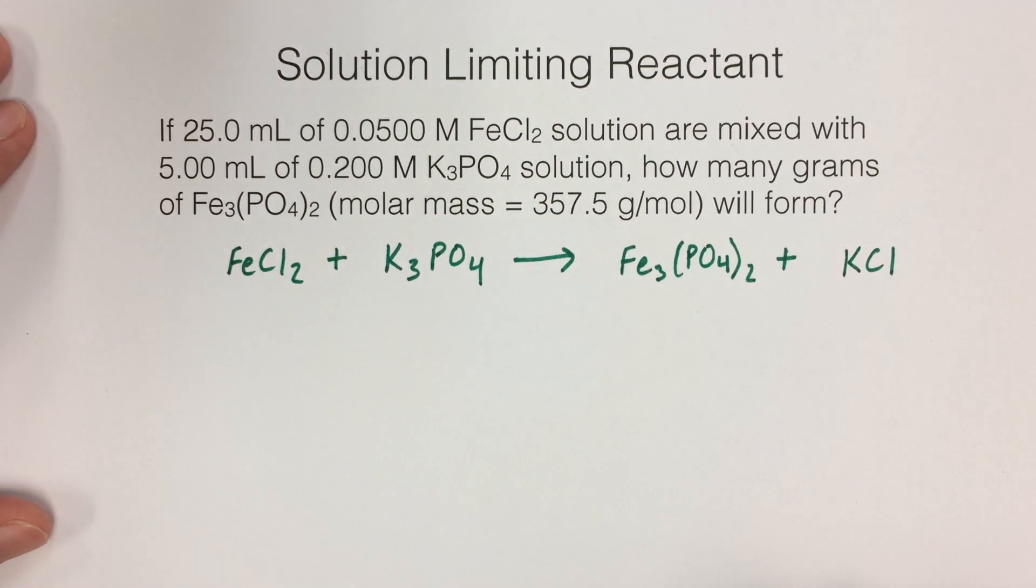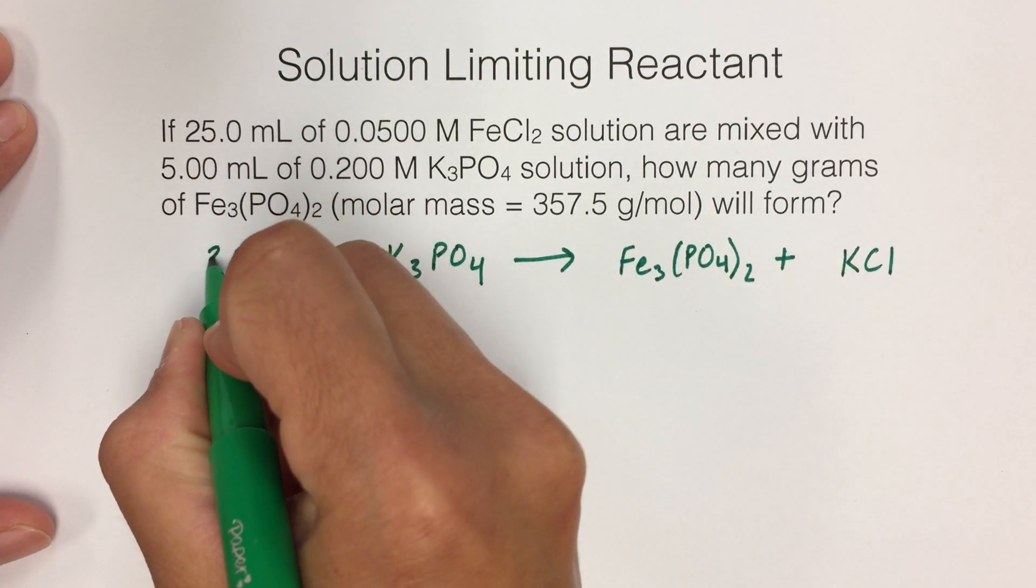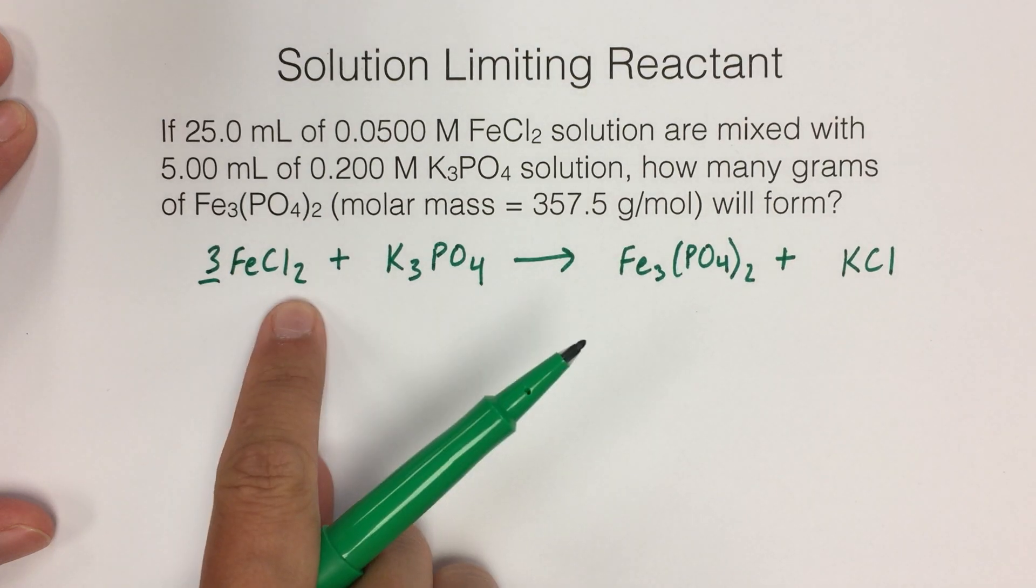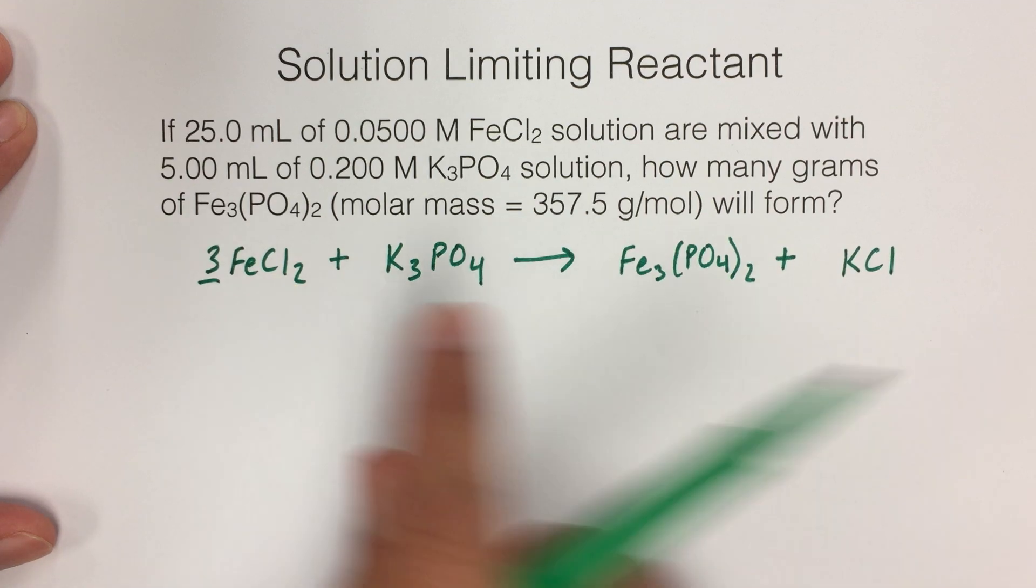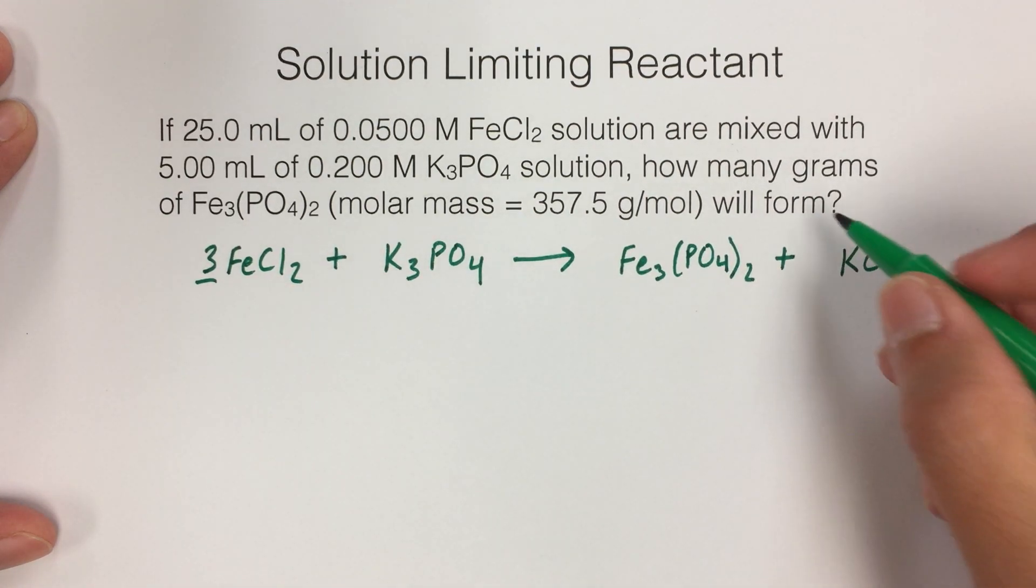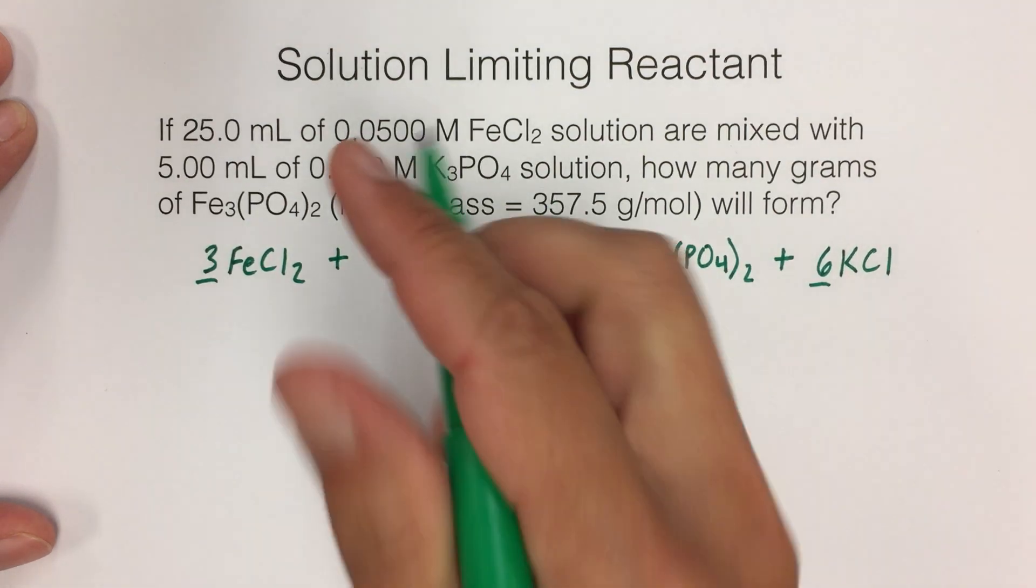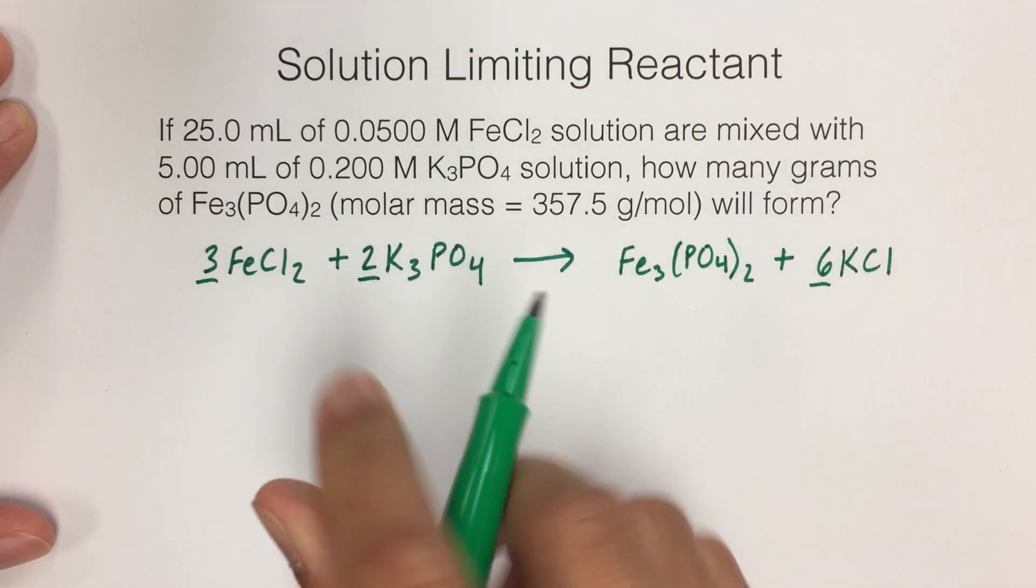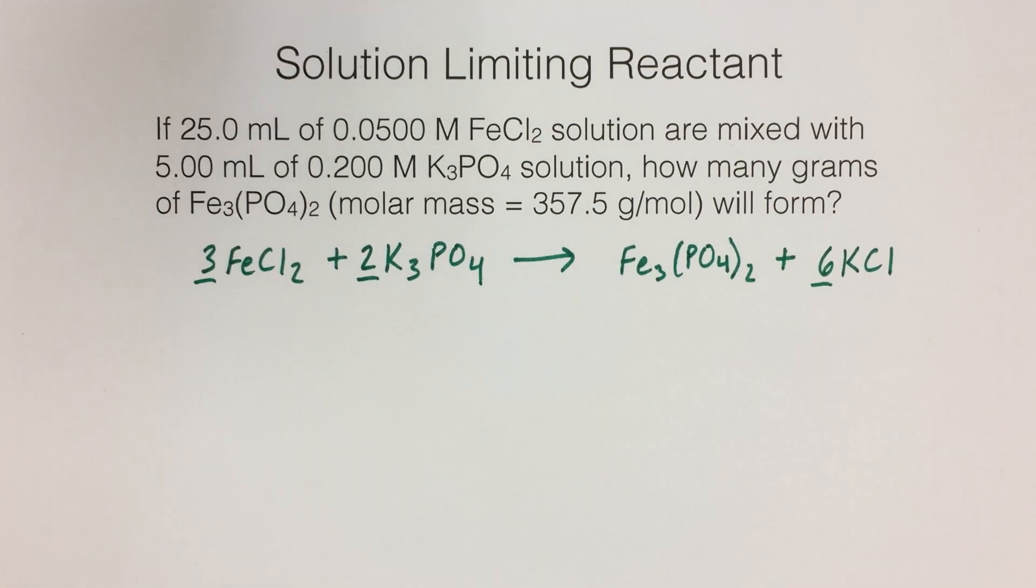Now we need to balance this. So irons, 1 iron here, 3 here, so we'll put a 3. That makes 6 chlorides, 2 times 3 is 6 chlorides. So we need to put a 6 here, which then makes 6 potassiums. We only have 3 here. So if we multiply it by 2, that will give us 6. And then that makes 2 phosphates, but we have 2 phosphates. So that's good. Don't worry about phases. We don't really need those for this one.